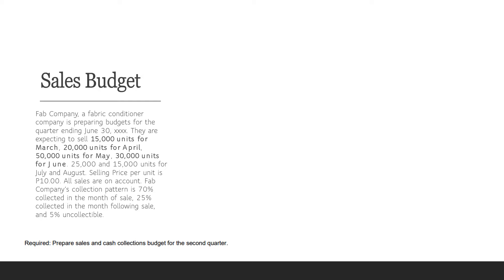Fog Company's collection pattern is 70% collected in the month of sale, 25% collected in the month following the sale, and 5% uncollectible. We are required to prepare the sales and cash collections budget for the second quarter.